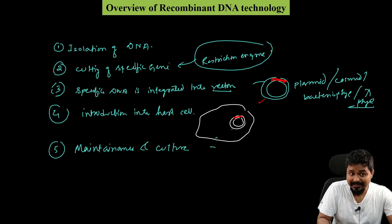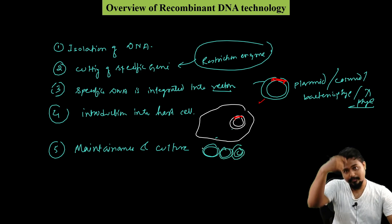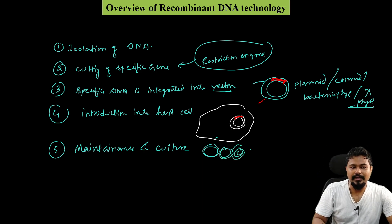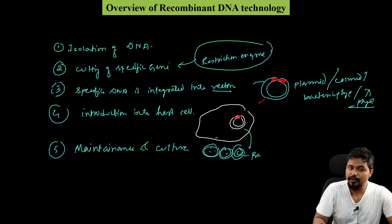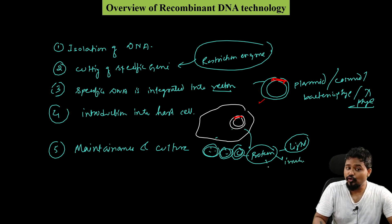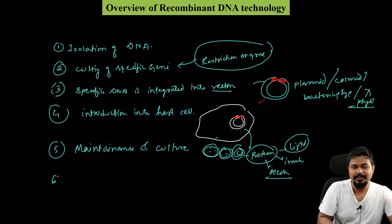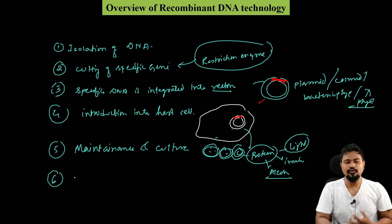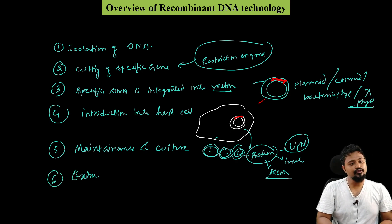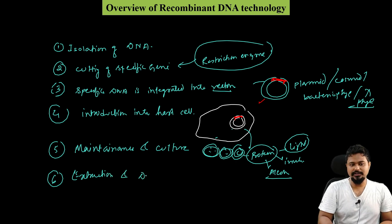Bacterial cells multiply and are very productive. Multiple bacterial cells produce large amounts of protein. For example, this protein could be insulin, or it could be alcohol or other products. We then perform extraction and downstream processing to retrieve the desired product.